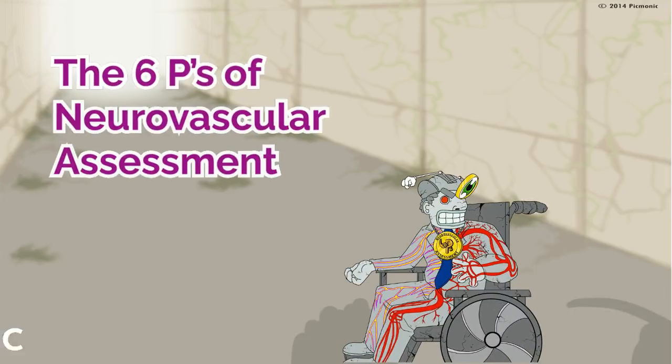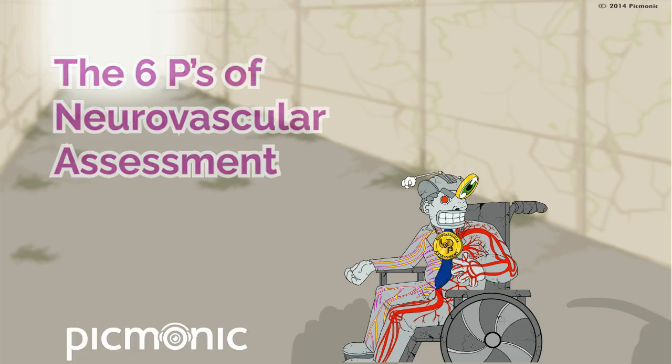The 6 Ps of Neurovascular Assessment. A neurovascular assessment, which is also called a CIRC check, is performed to determine if there is adequate circulation and sensation to an extremity. Here are the 6 Ps of Neurovascular Assessment.